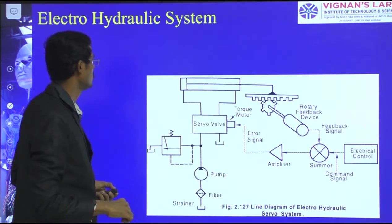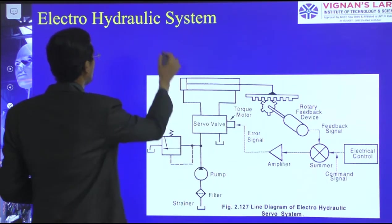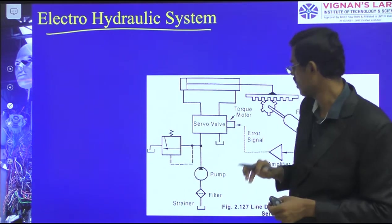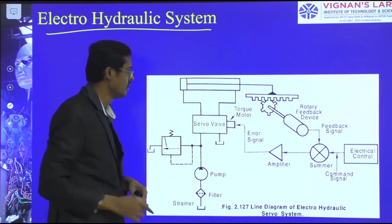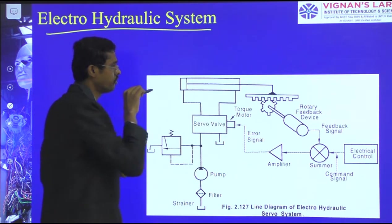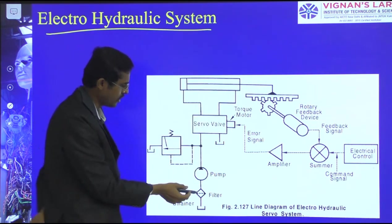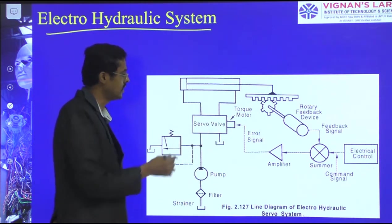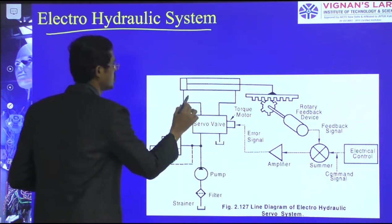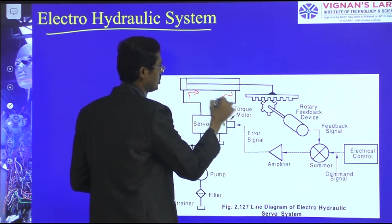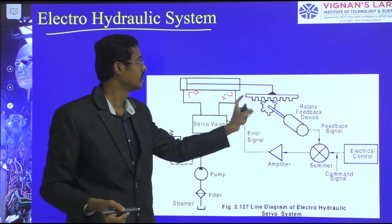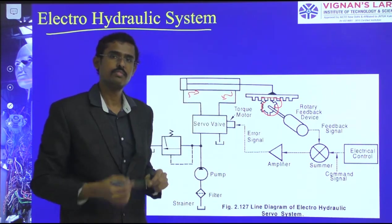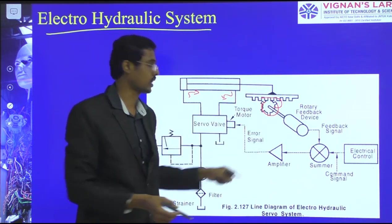Now I want to mention the electro-hydraulic system. Having seen electrical and hydraulic systems separately, I want to connect both to perform an electro-hydraulic system. A piston needs to operate forward and reverse. From a hydraulic pump, fluid is taken to a servo valve — whether forward or reverse action — to rotate the shaft. The shaft rotation is monitored by a motor rotation feedback device connected to the electrical control.